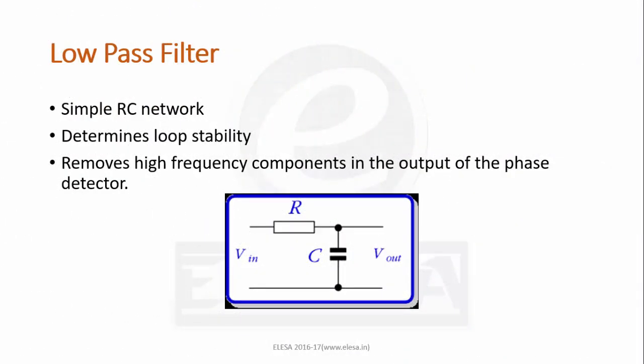The third component is low pass filter. It is a simple RC network. It determines loop stability. It removes high frequency components in the output of phase detector and also removes high frequency noise and produces a steady DC level.